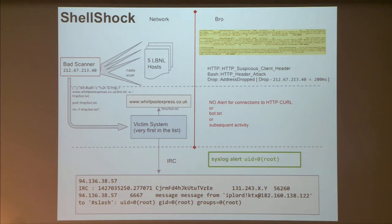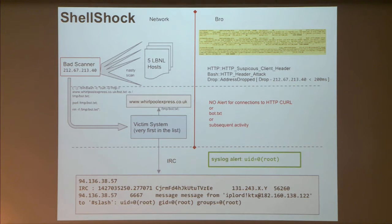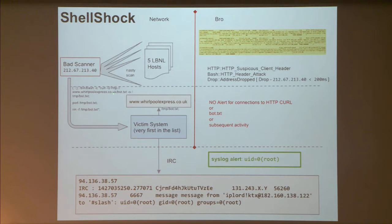The victim system was exploited via an HTTP request targeting Shellshock. Bro generated three alerts — suspicious client header, HTTP header attack — and the IP was dropped in less than 200 milliseconds. However, the malicious activity had a curl request embedded in it going to whirlpoolexpress.co.uk. Bro did not generate any alert for the curl request, for bot.txt, or any subsequent activity. The incident was ultimately caught by a syslog alert flagging UID equals zero (root) activity.